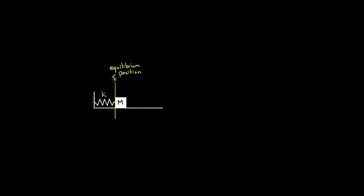Let's say you've got a mass connected to a spring and the mass is sitting on a frictionless surface. If the mass is sitting at a point where the spring is just at its natural length, the mass isn't going to go anywhere, because when the spring is at its natural length, it neither pushes nor pulls and has no spring energy. We call this the spring's natural length, and for a mass on a horizontal spring, this is also the equilibrium position.